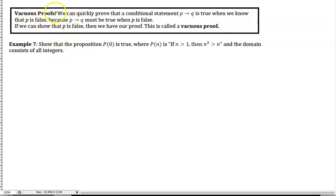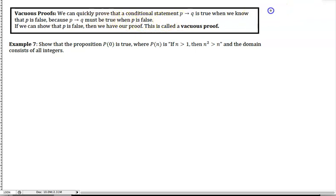A vacuous proof: we can quickly prove that a conditional statement is true when we know that p is false. Because 'if p then q' must be true when p is false — that comes from the truth table for the conditional.